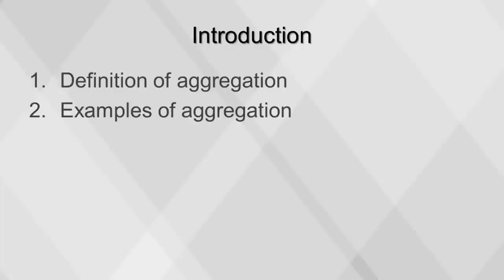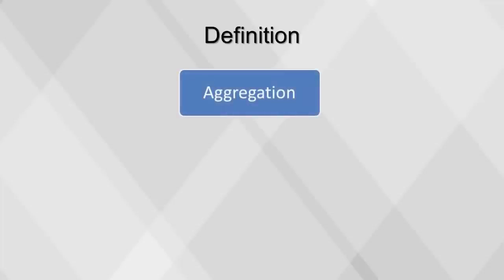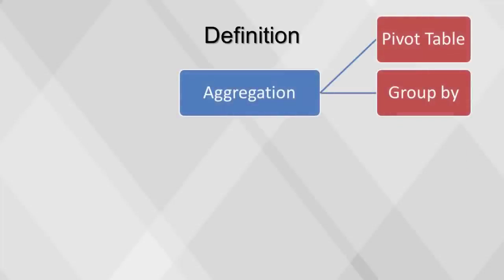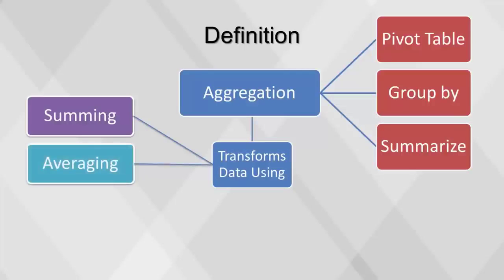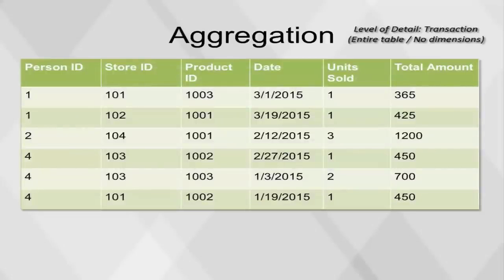This video will cover a definition of aggregation, as well as examples of aggregation. Aggregation is also referred to as a pivot table, group by statement, or summarize. Aggregation transforms data into lower dimensions using summing, averaging, and counting. The benefits of this are to answer basic questions of datasets with many different dimensions. In this case, each row is a transaction, and the table as a whole represents sales for phones for quarter one of 2015.